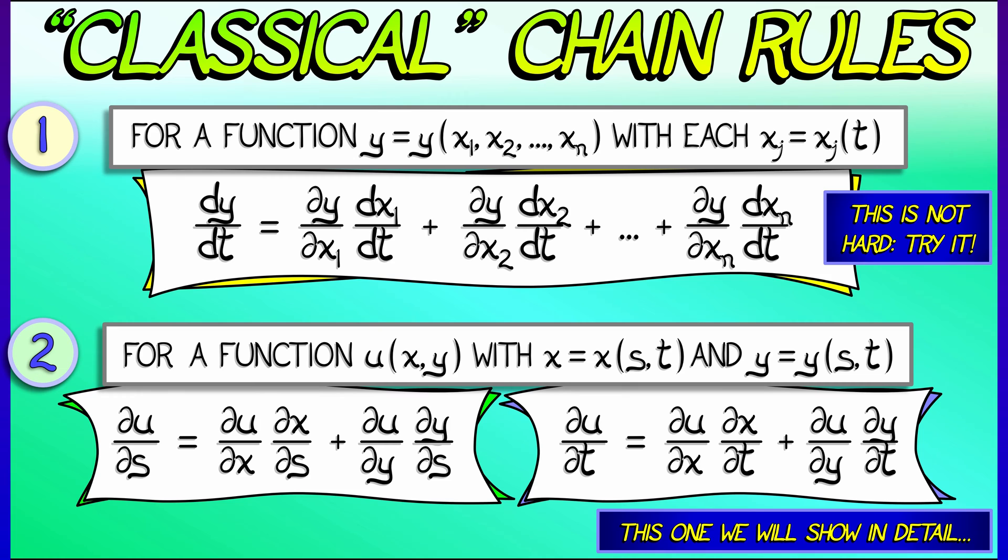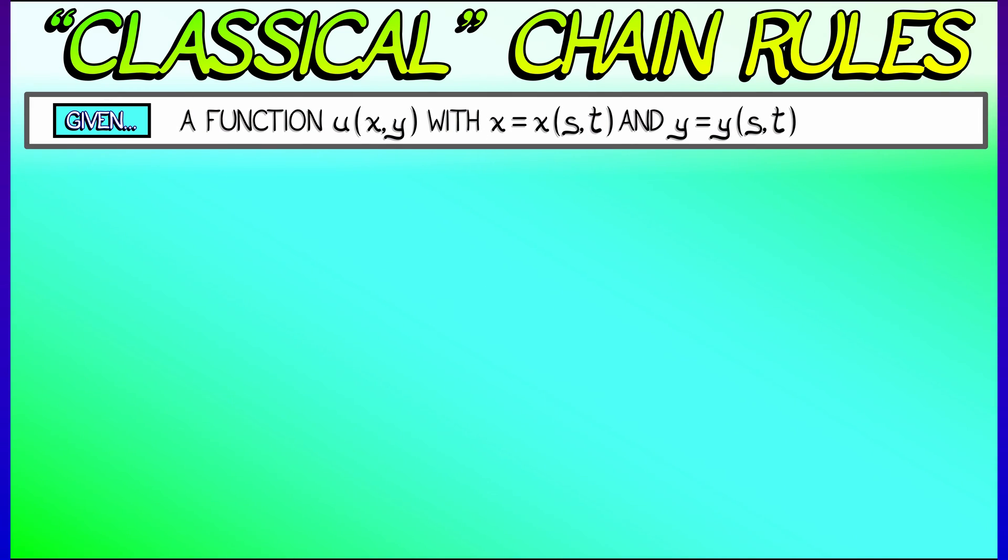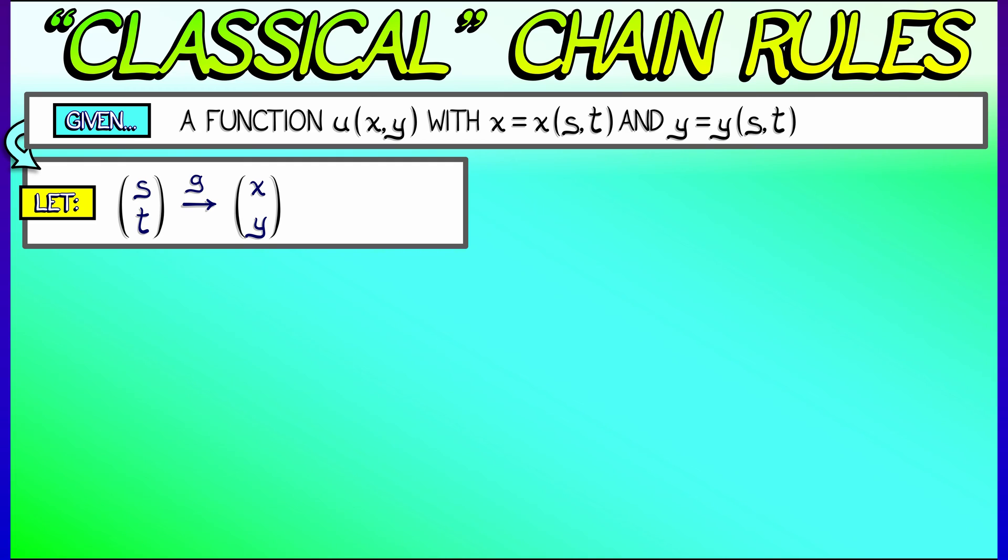Let's do this second one in detail. Let's say you've got u that depends on x and y, x and y each depend on s and t. Let's lay things out cleanly, carefully. Let's say that g is the function that takes s and t to x and y, and then f is the function that takes x and y to u.